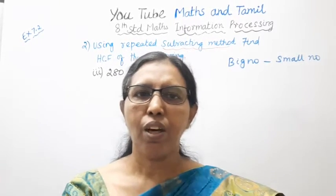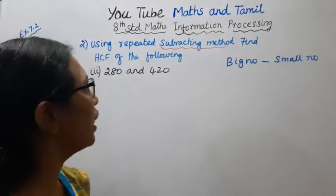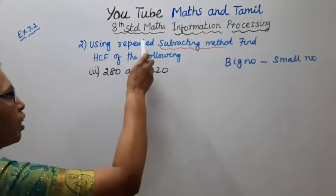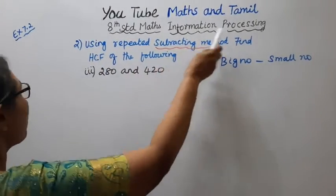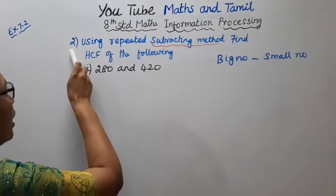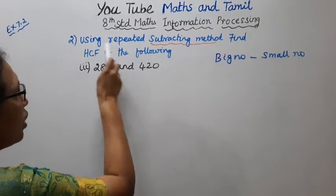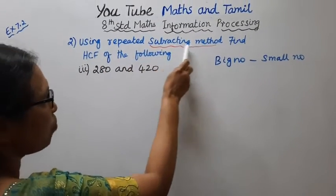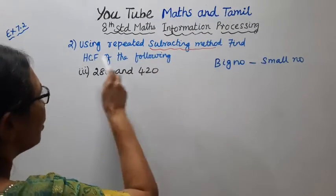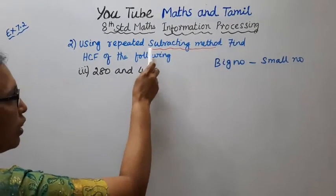Hello students, welcome to Max and Tamil channel. H-Tenamax Information Processing, Exercise 7.2, Second and Third Subdivision. Using repeated subtracting method, find HCF of the following.